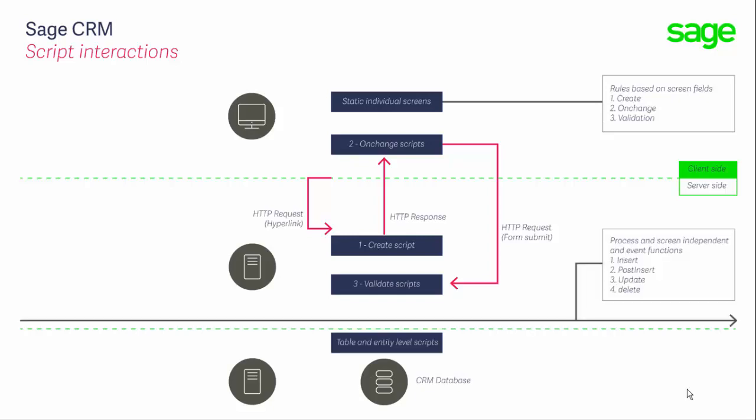There's another type of script executed within the server — these are called table level scripts. They are executed still within the web server, but before the data is actually committed into the database. As the data is inserted, updated, or triggered, it triggers an event. These events can have scripts attached to them that cause other work to be done. For example, a change to an assigned user can trigger an email, or if a new opportunity is inserted, a new task could automatically be added into the user's diary. You'd express those actions using JavaScript.